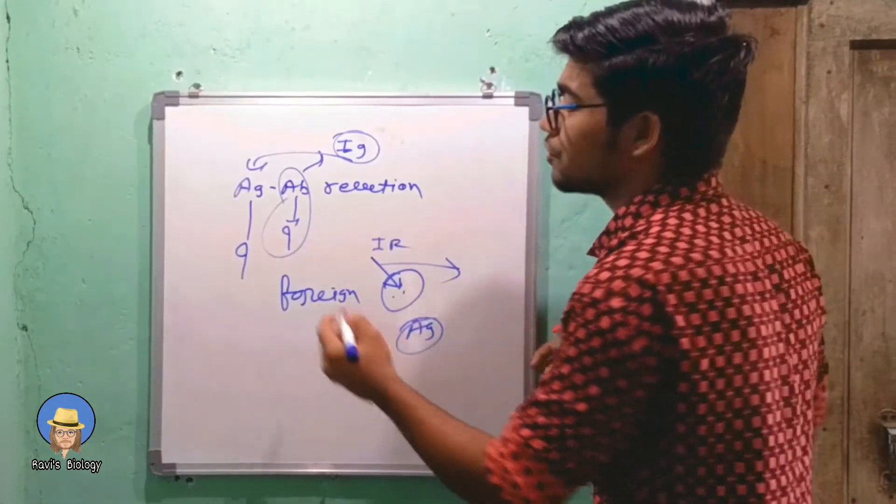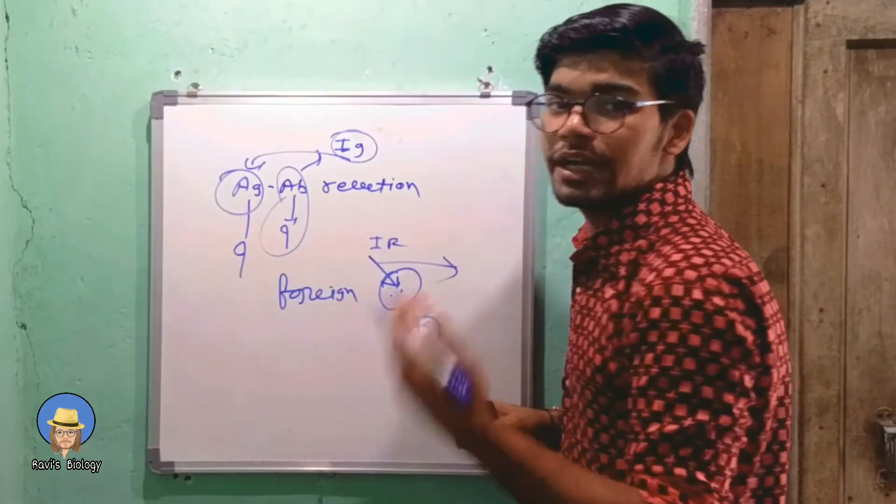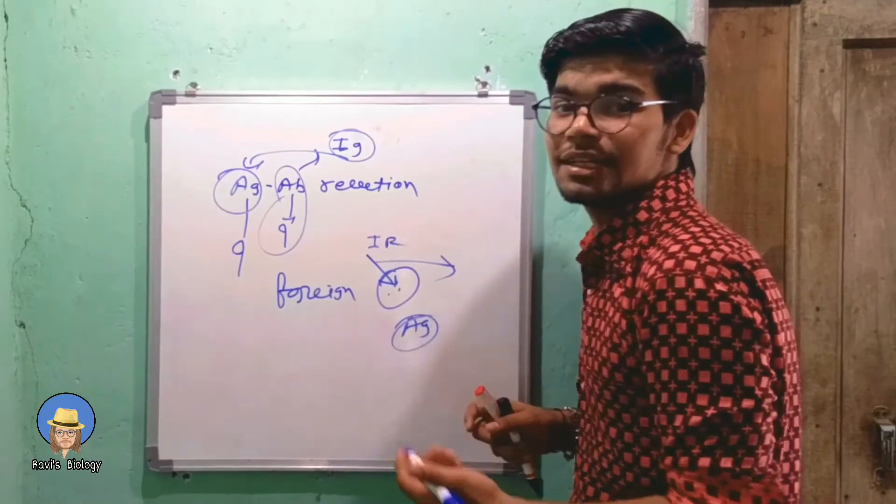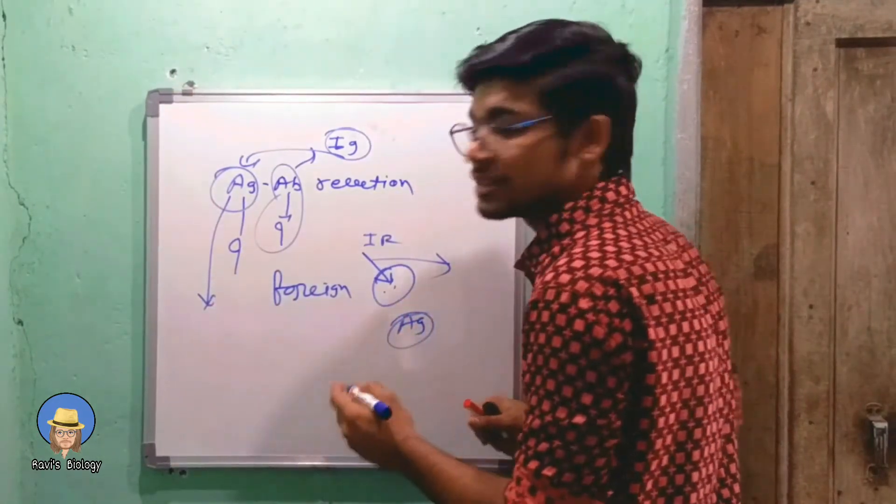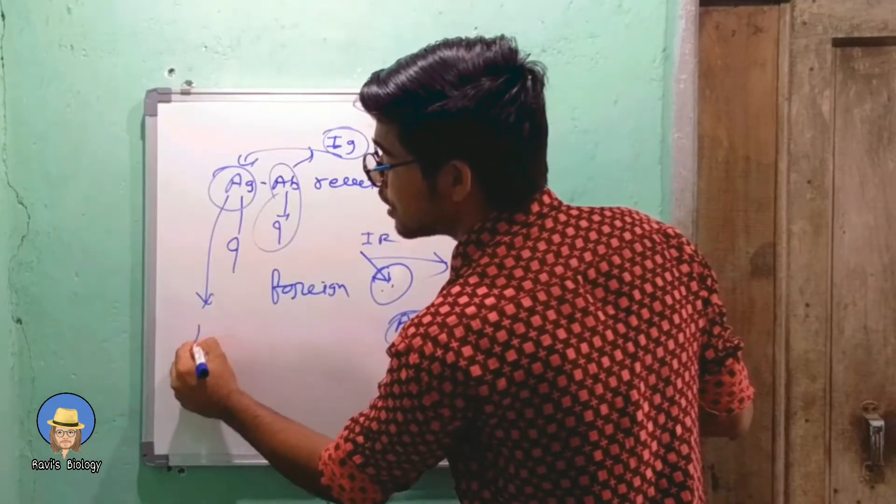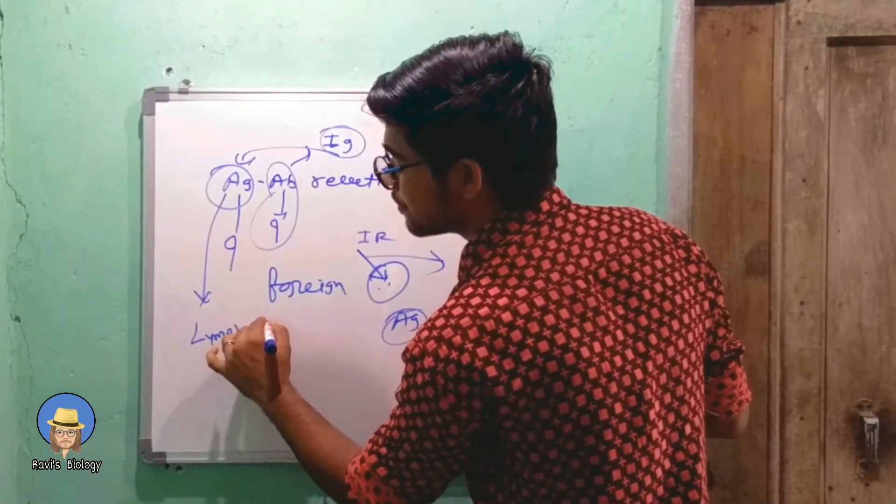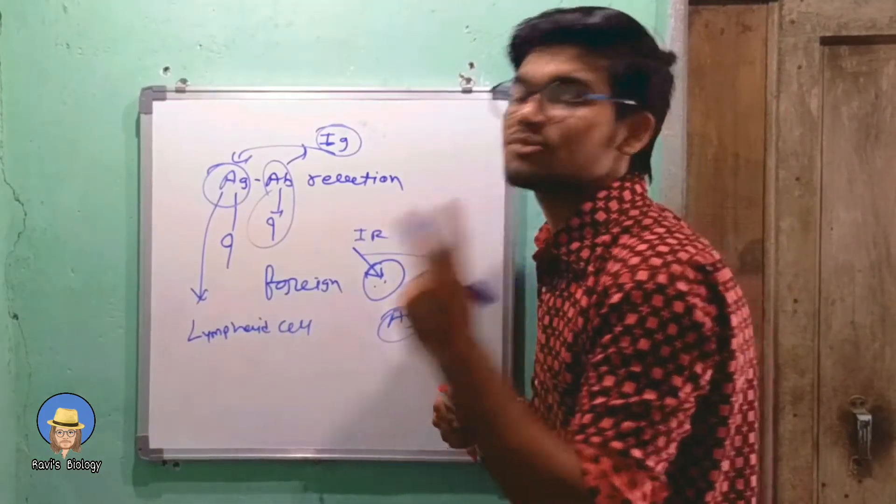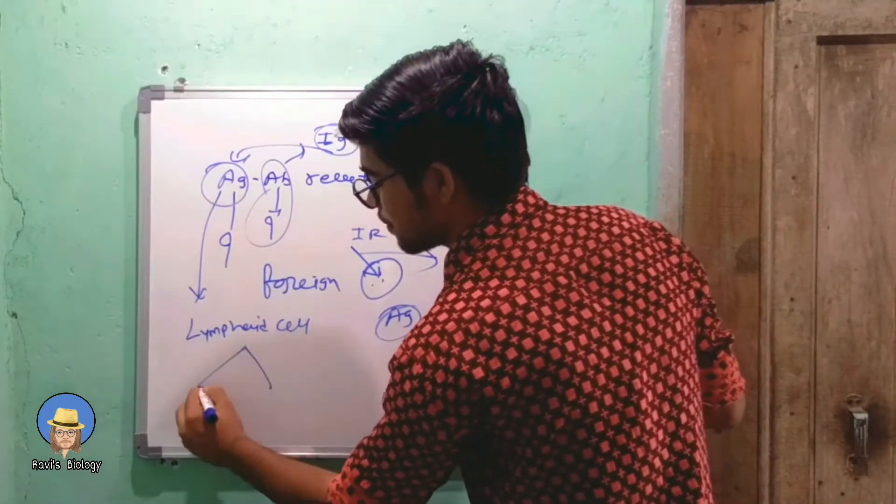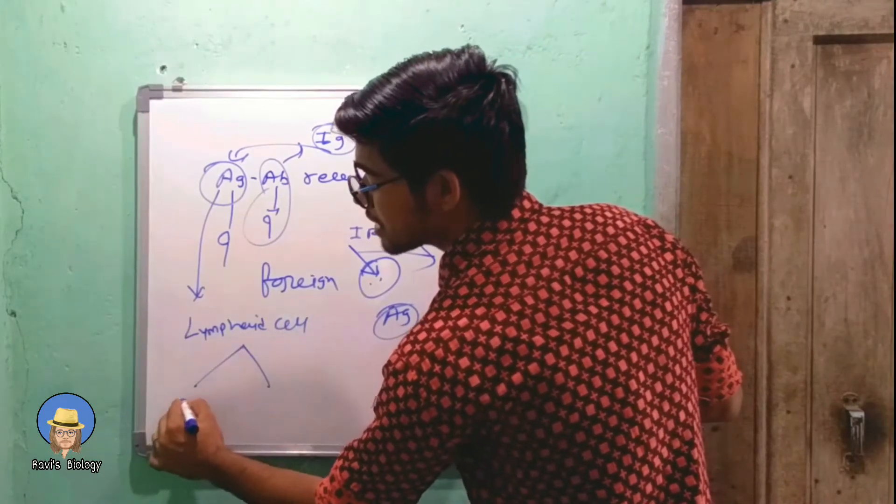First, whenever a foreign antigen which is not recognized comes, it will be introduced into lymphoid cells. The lymphoid cell recognizes and produces two types of cells: one is plasma cell and second is memory cell.